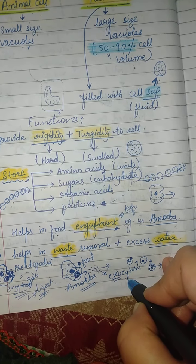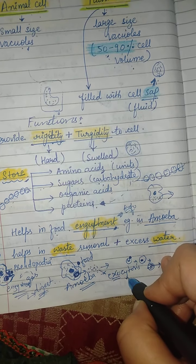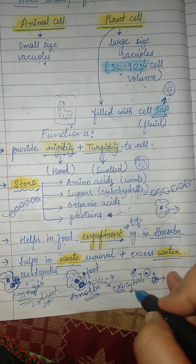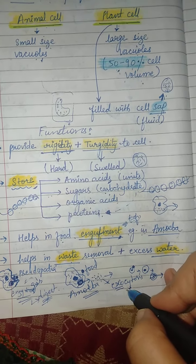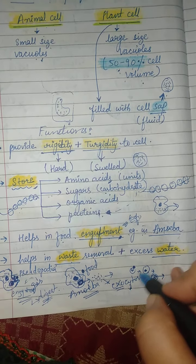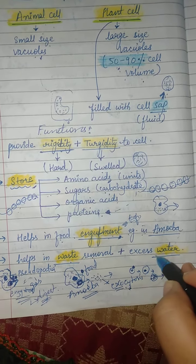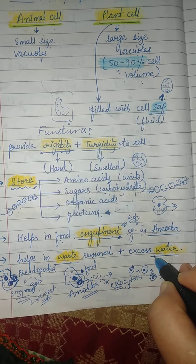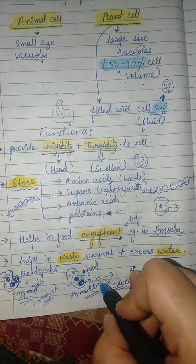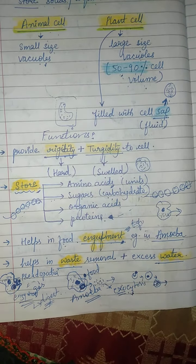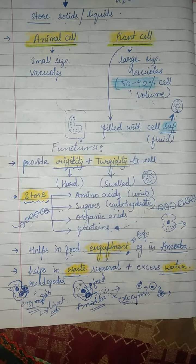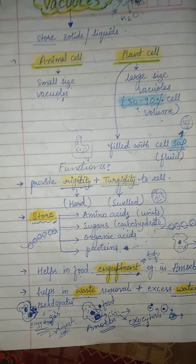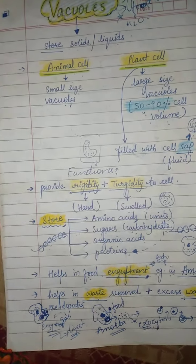The waste and excess water are expelled from the cell through exocytosis. The intake process is called endocytosis. That is all about cell vacuoles — thank you students.